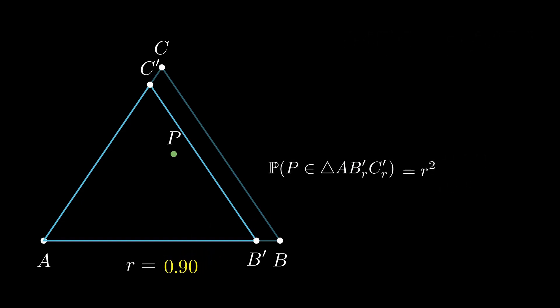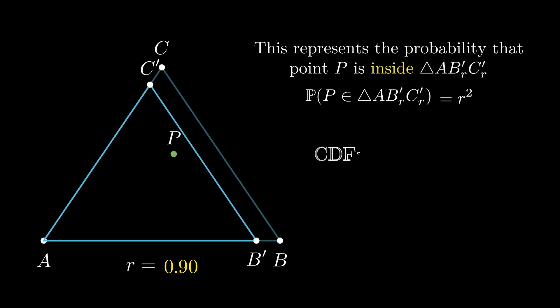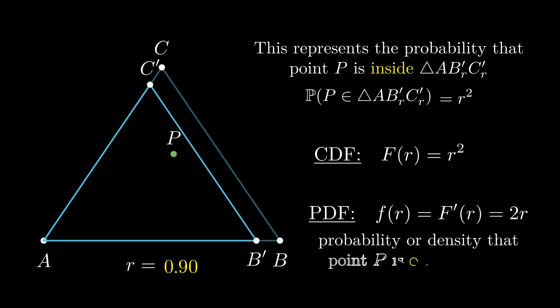This R² represents the cumulative distribution function of the event that P lies inside the scaled triangle. Then the differential of this CDF with respect to R gives the probability or more precisely the density function of the event that P lies on triangle AB'C'. Because A is the point of scaling and point P lies inside triangle ABC, this means that the density function f(r) of P lying on side B'C' is 2r.